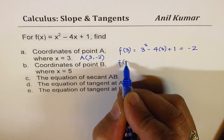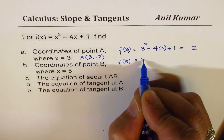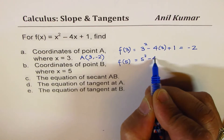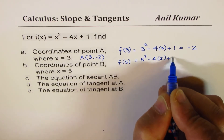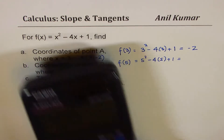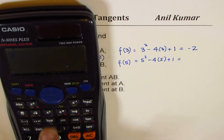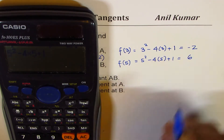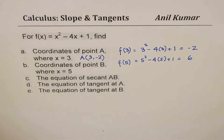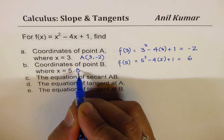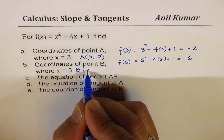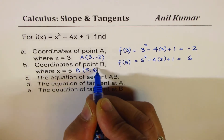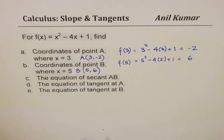Now for point B, x = 5, so we calculate 5² - 4(5) + 1 = 25 - 20 + 1 = 6. So the coordinates of point B are (5, 6).